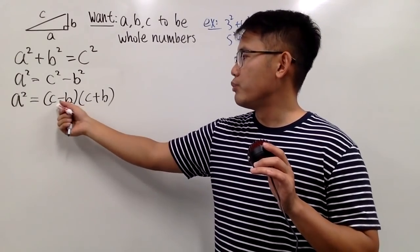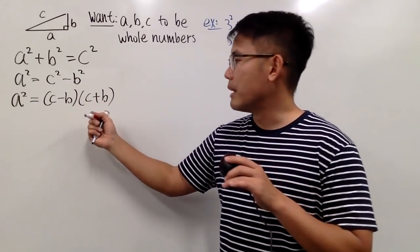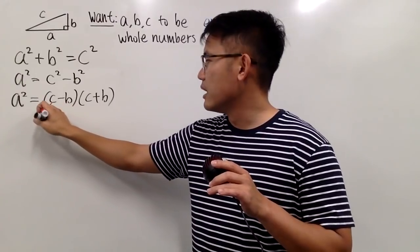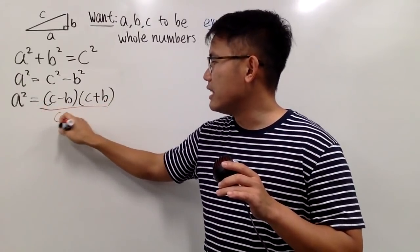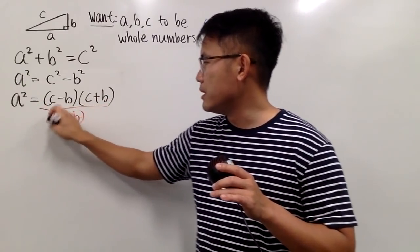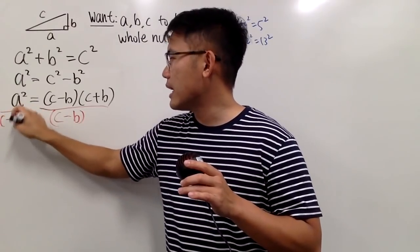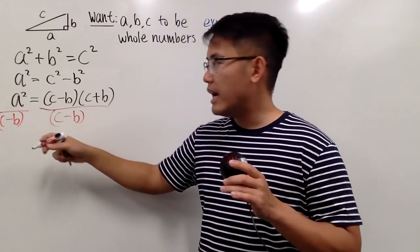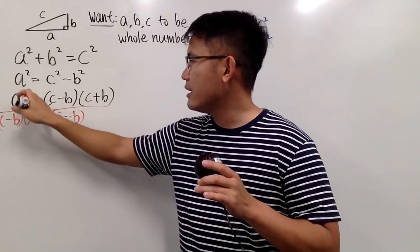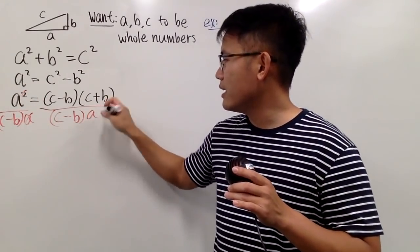And you can bring one of these wherever you want. But let me just say this to the other side. And I can do so by dividing both sides by C minus B. So let me divide that on both sides. And in the meantime, I will divide the A so that this and that will be cancelled. So divide A like this.